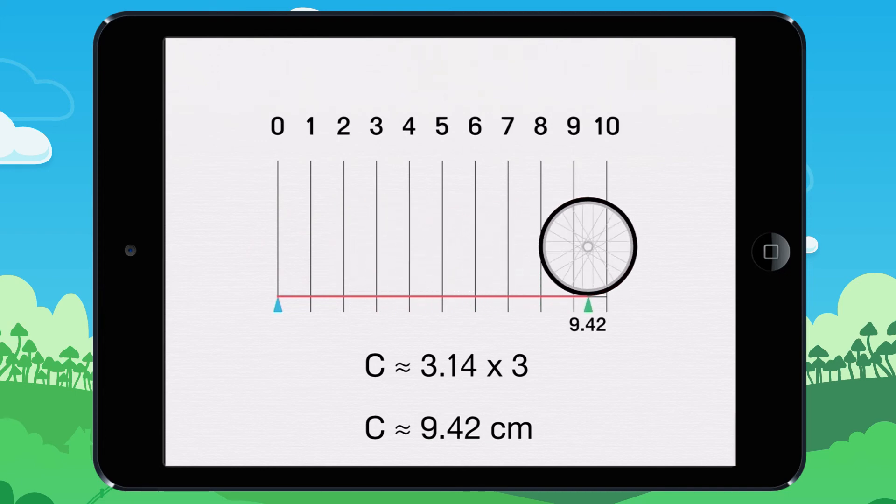A wheel whose diameter is 3 centimeters has a circumference of approximately 9.42 centimeters.